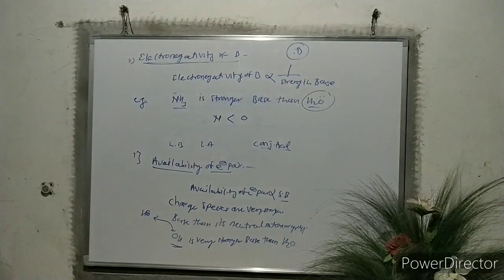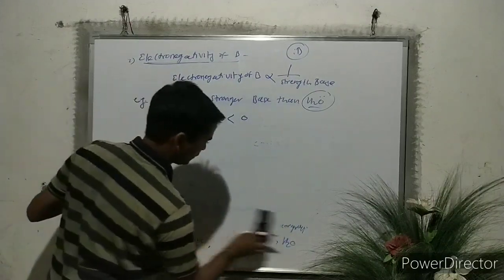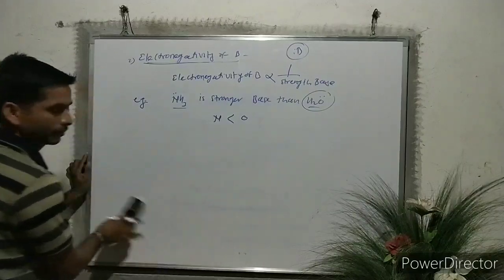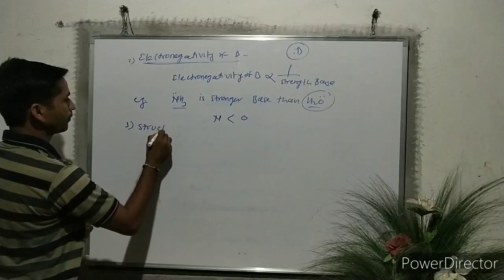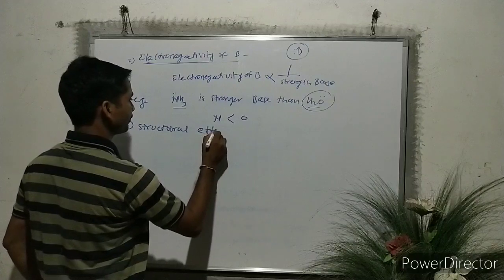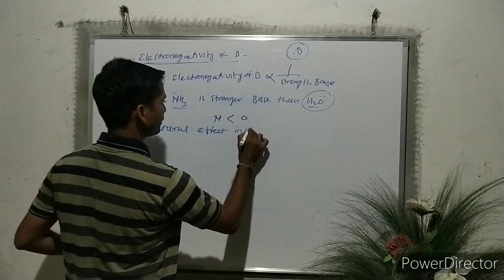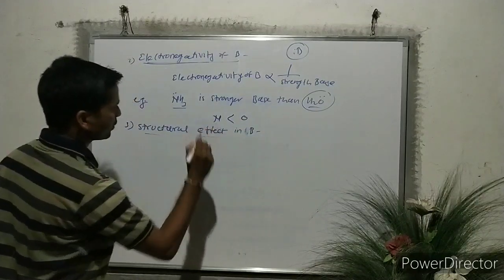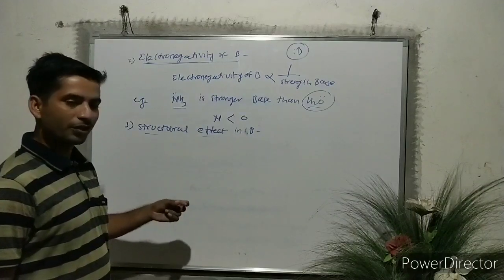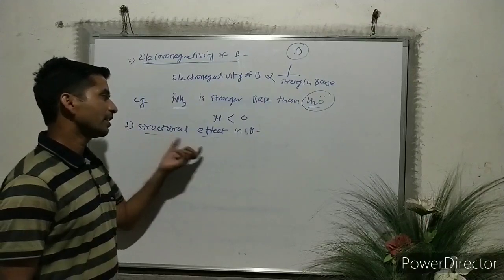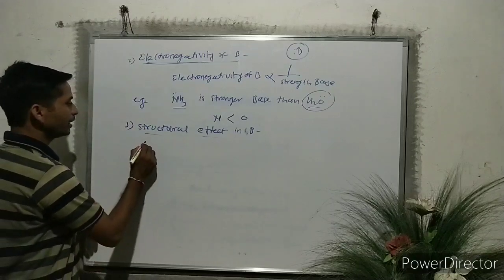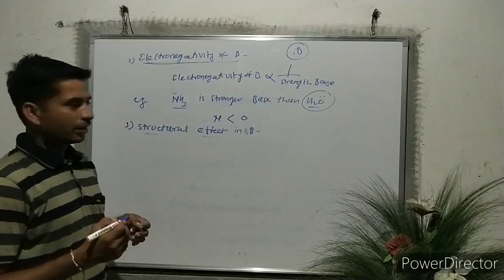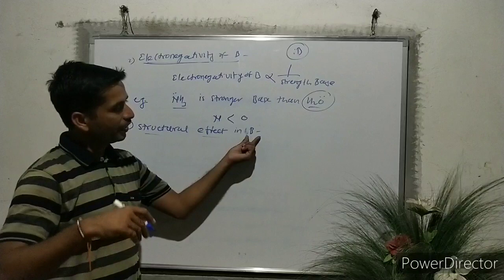The third factor is structural effect in B. Structural effects include resonance effect, inductive effect, hyperconjugation, tautomerism, and hydrogen bonding. These structural effects also decide the strength of the base. There are two types: donating effects and withdrawing effects. If there are donating structural effects, they increase the ability of the lone pair on B and hence directly increase the strength of the base.